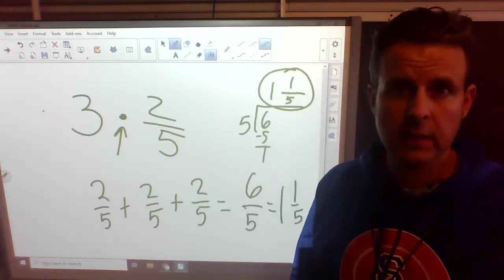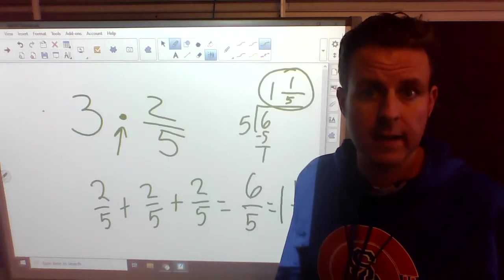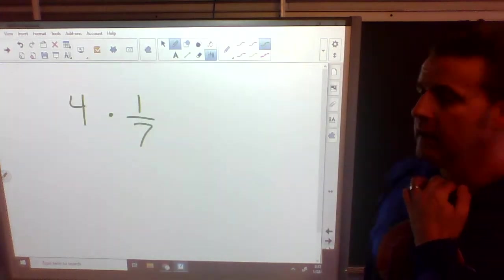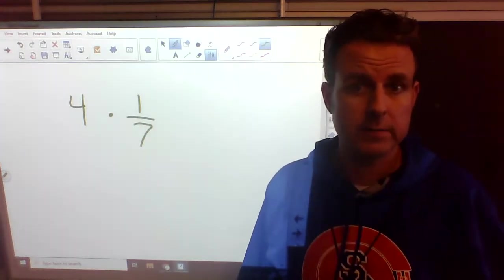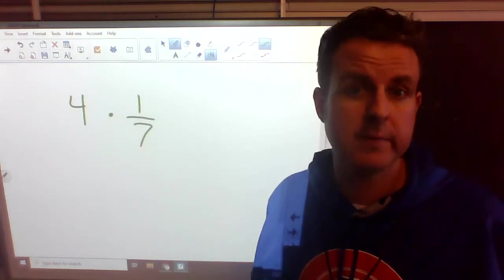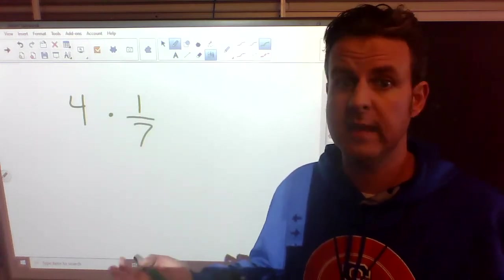Alright, Mr. Drake, that's kind of a lot of work. You're right. I'm going to make it a lot easier for you. So next, we have, again, a whole number times a fraction, just like before. Really, this would be like 1 seventh plus 1 seventh plus 1 seventh plus 1 seventh. That's a lot of work.